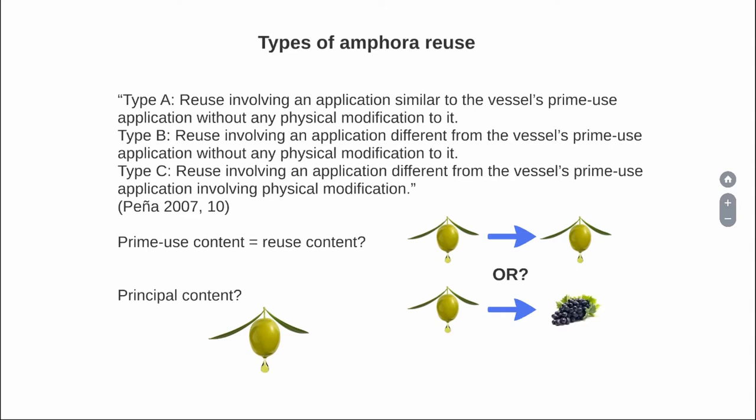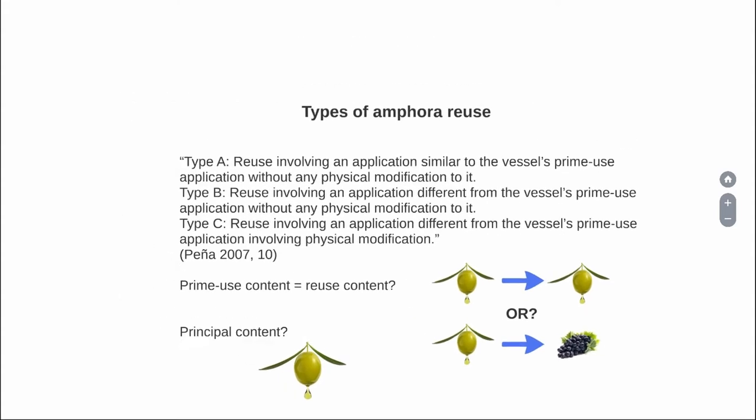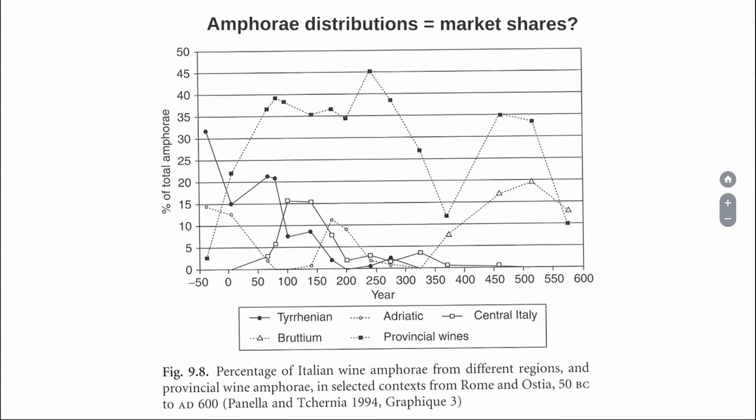Related to that is the assumption that every one of these amphorae has a principal content. That an amphora type — a particular shape of amphora produced in a particular region — was also linked to a particular type of foodstuff from that region. For example, amphorae produced in North Africa could be related to locally produced olive oil. So should we interpret the distribution of these amphorae as equaling the distribution of those products? This is something that we do all the time in Roman archaeology.